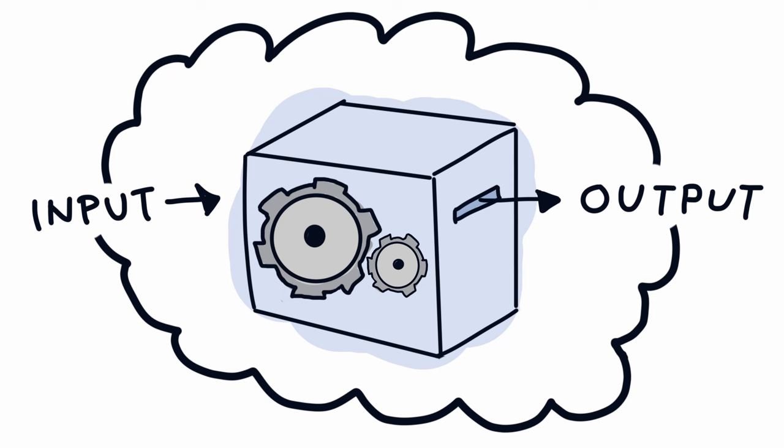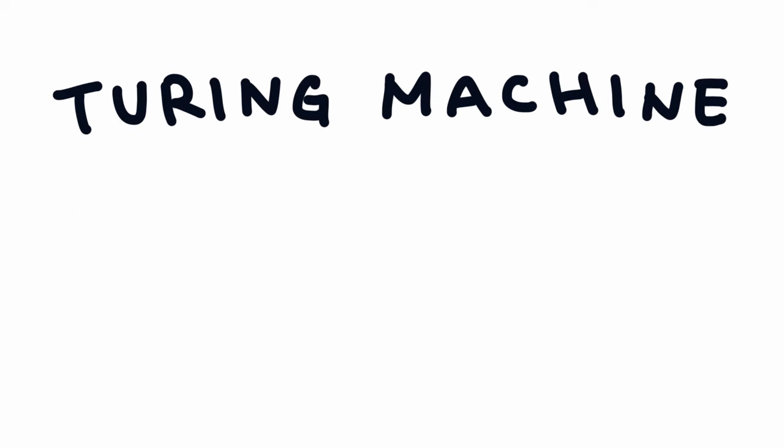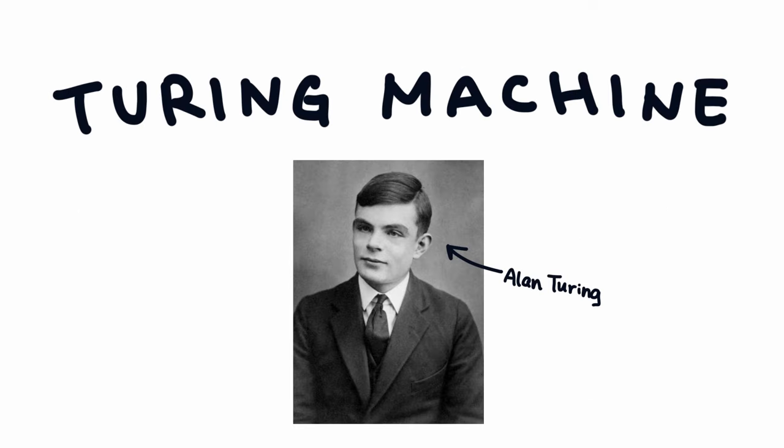A model of computation you might have heard of before is a Turing machine, developed by Alan Turing to prove how there are a lot of problems in this world that can never be solved through computing.